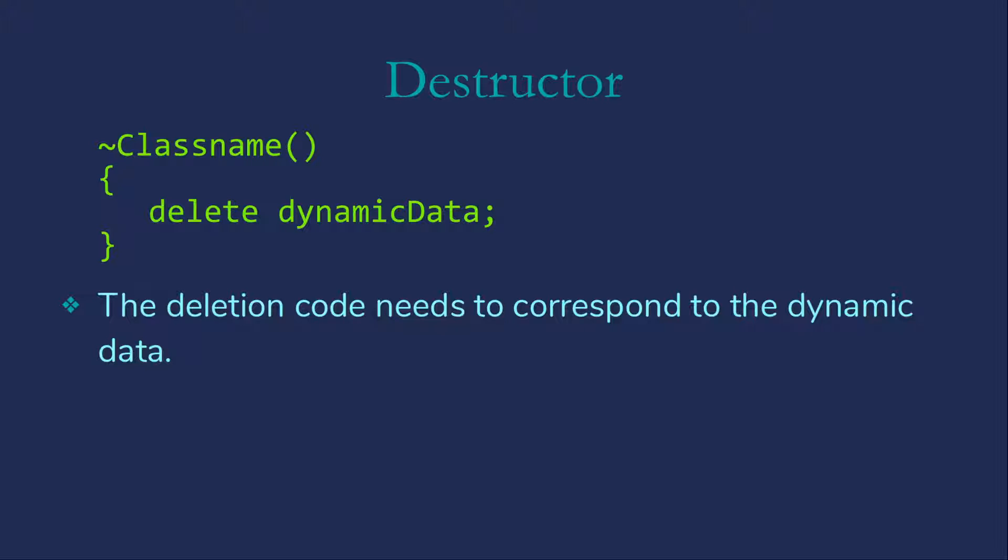In this example, I'm assuming that the dynamically allocated data is a single item. If it were an array, we would use the array form of delete. If it were something more complex, like a linked list or a tree, we would have to write the appropriate code to delete all of the nodes in the list or tree.